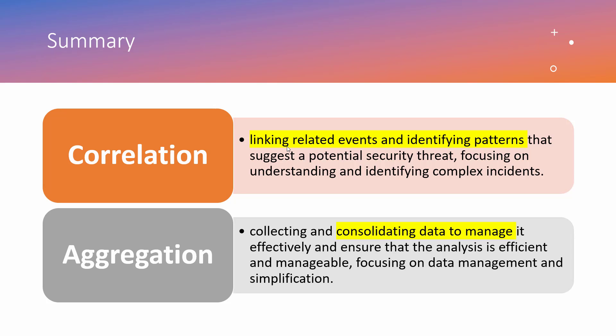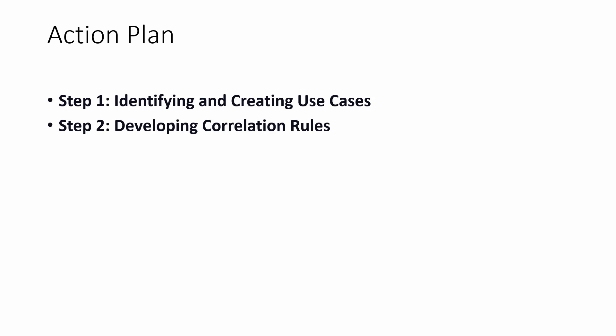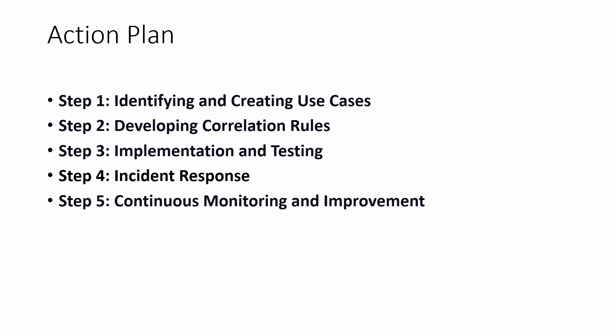Then on that aggregated data, we apply correlation. To summarize: correlation is all about linking related events and identifying patterns that suggest a potential security threat, focusing on understanding and identifying complex incidents. Aggregation is all about collecting and consolidating data to manage it effectively, ensuring the analysis is sufficient and manageable, focusing on data management and simplification. First we aggregate, and then we correlate.